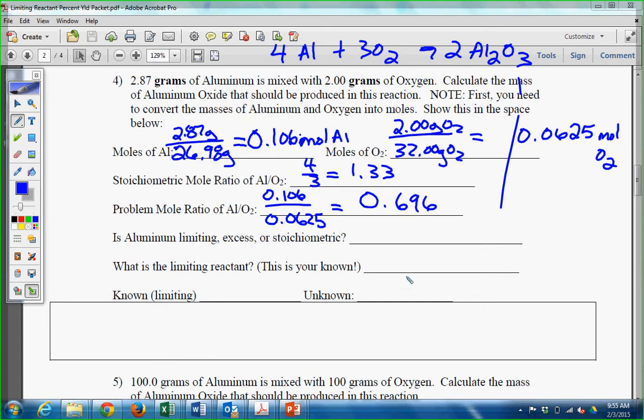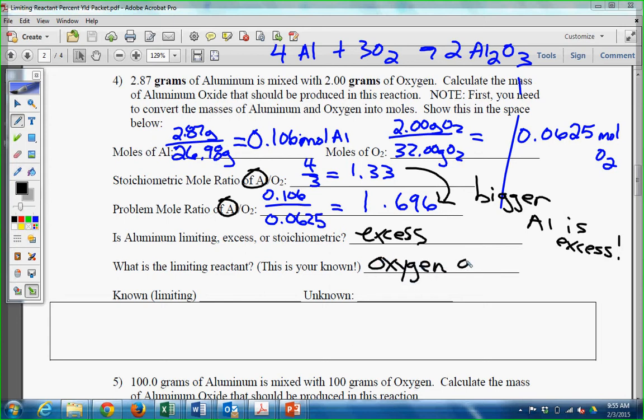Stoichiometric mole ratio of aluminum to oxygen, 4 over 3. Problem ratio aluminum is 0.106 over 0.0625. What do you get when you have that? 1.696. Now I ask you this. Is this number bigger or smaller? Bigger. That means that this is in excess. Aluminum is in excess. What is limiting? Oxygen.